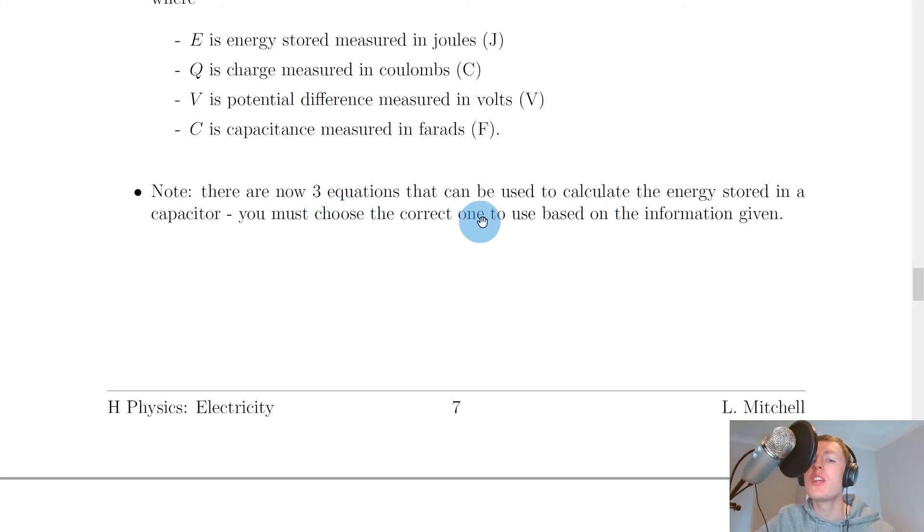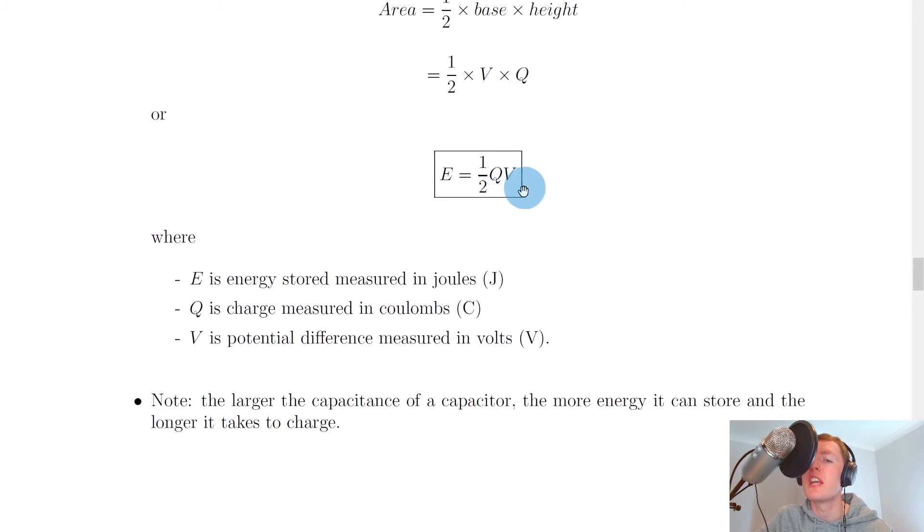Lastly, it says to note there are now three equations that can be used to calculate the energy stored in a capacitor. You must choose the correct one to use based on the information given. If the question gives you a charge and a potential difference, then you're going to use this equation, e equals a half qv, to calculate the energy.